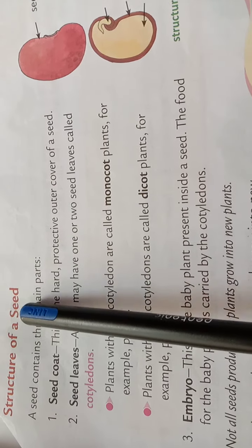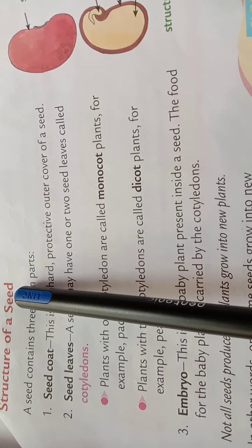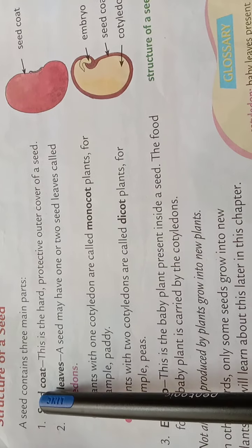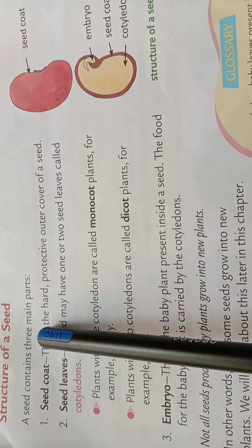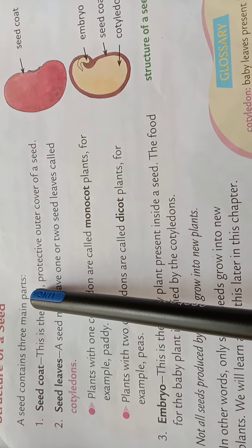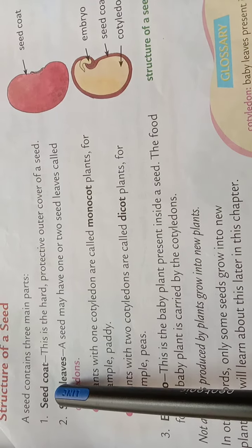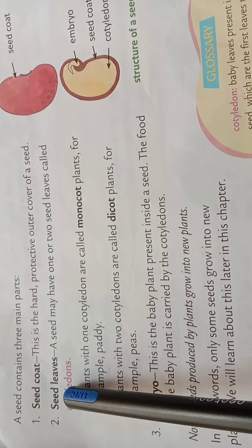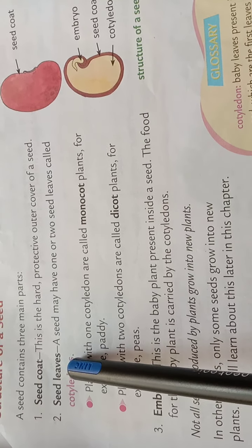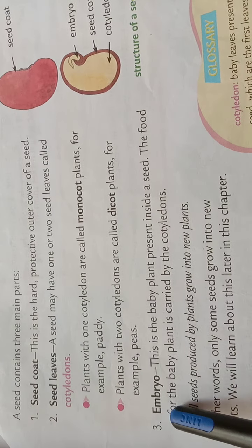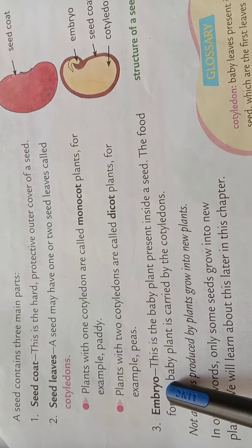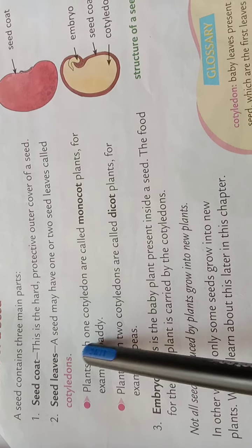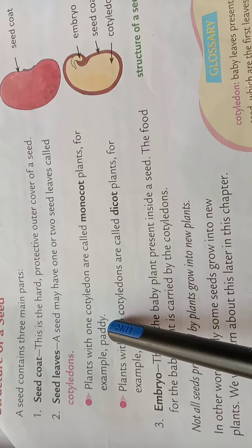Now, structure of a seed. A seed contains three main parts: number one, seed coat; number two, seed leaves; and number three, embryo. We'll learn these in detail.